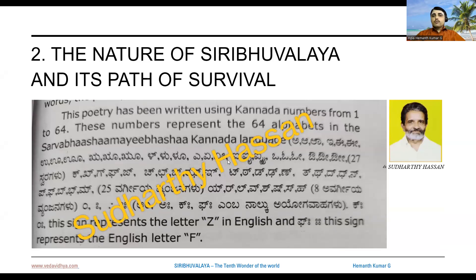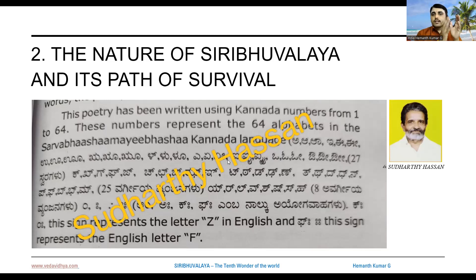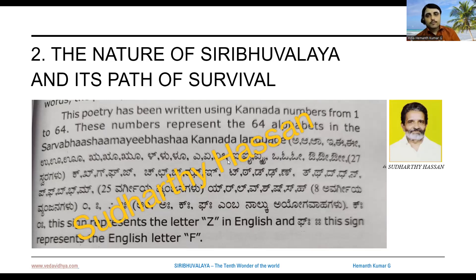The nature of Sri Bhu Alaya and its path of survival. As already mentioned, Sarvabhasha Mai Bhasha Sri Bhu Alaya is an ancient Kannada poetry in numerics. In other words, the poetry is written in Kannada numbers from 1 to 64. These numbers represent the 64 alphabets in the Sarvabhasha Mai Bhasha Kannada language.